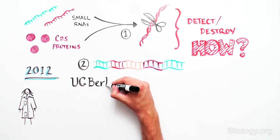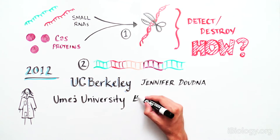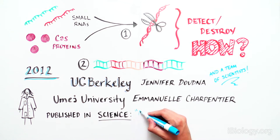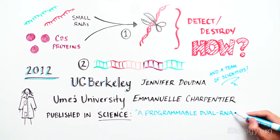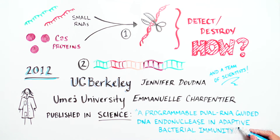This discovery came from a group of scientists led by Jennifer Doudna at UC Berkeley and Emmanuelle Charpentier at Umeå University in Sweden. They published their results in Science in an article titled A Programmable Dual RNA Guided DNA Endonuclease in Adaptive Bacterial Immunity.